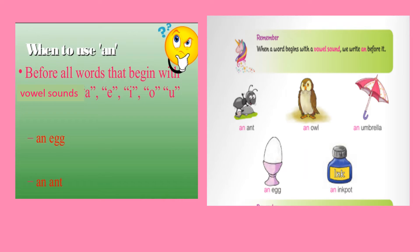Children, the article 'an' is used before all the words that begin with vowel sounds. That is, words that begin with the sounds of A, E, I, O, U.